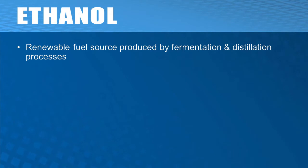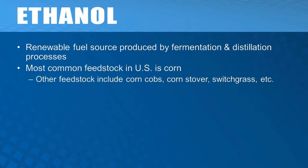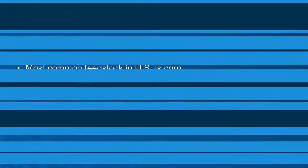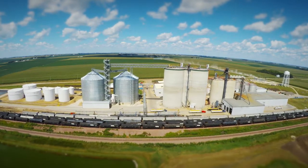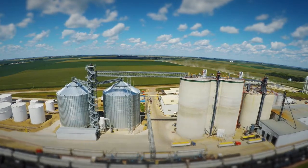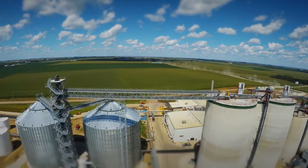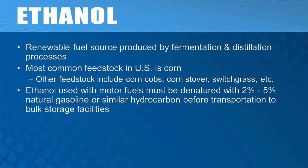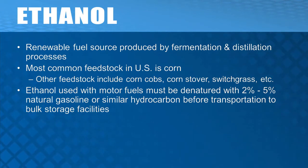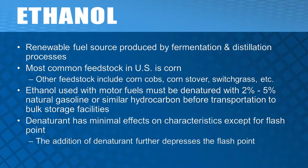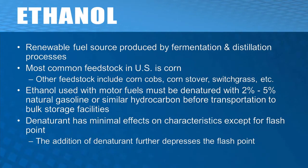Ethanol is a renewable fuel source produced by a fermentation and distillation process of sugars and starches found in grain like corn and sorghum, beverage and food waste, and cellulosic biomass like corn stover and switchgrass. An ethanol biorefinery uses engineering techniques such as distillation and dehydration to produce fuel-grade ethanol. Ethanol for use in motor fuel blends will generally be denatured with 2 to 5% gasoline or a similar hydrocarbon before being transported to bulk storage facilities. This training program focuses on denatured fuel ethanol.